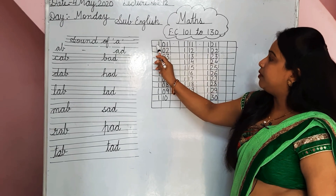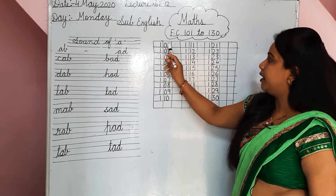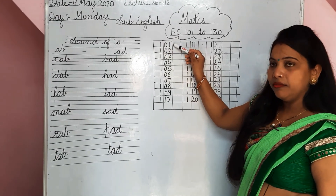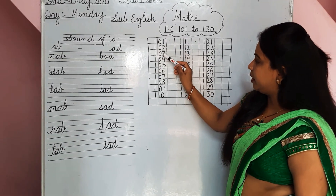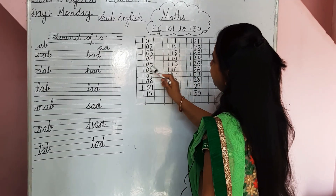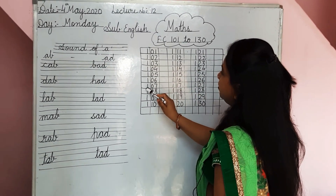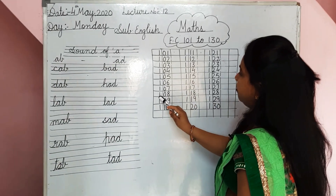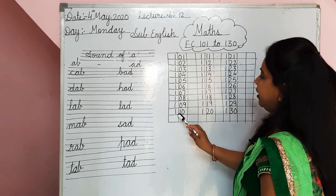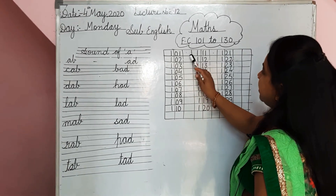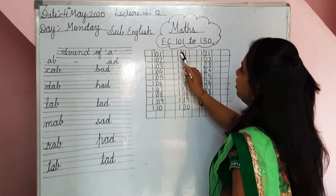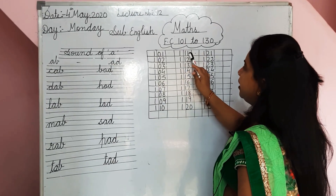Now will we start from 101. Speak with me: 101, 102, 103, 104, 105, 106, 107, 108, 109, 110.